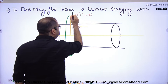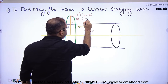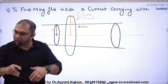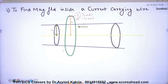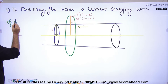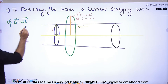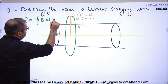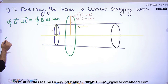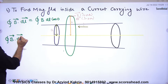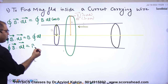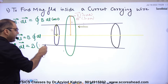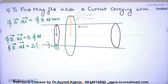I have taken a closed path and I need to find B on it. The angle between B and dl is zero, so the integral becomes ∮B·dl = B·∫dl. The radius of this closed path is r, so ∫dl = 2πr. Therefore, ∮B·dl = B × 2πr. This is equation number 1.